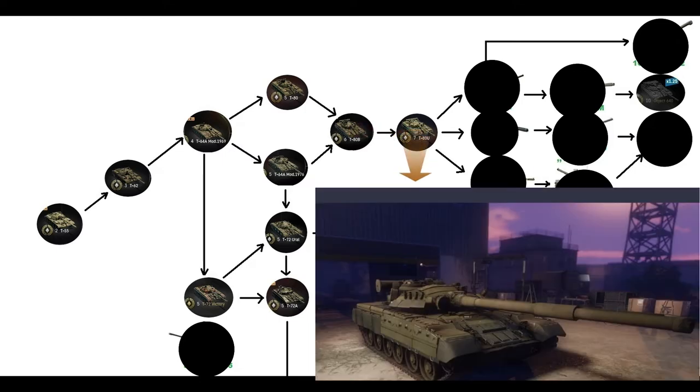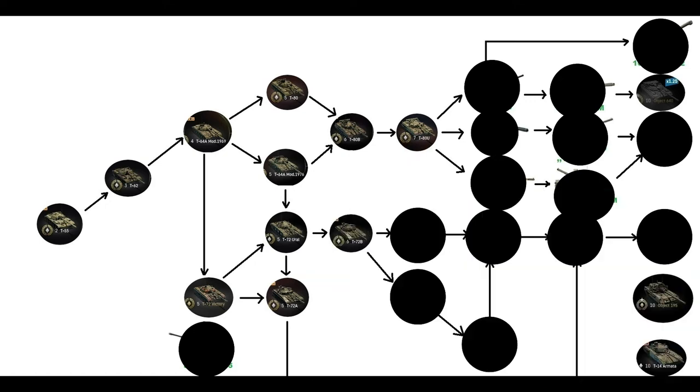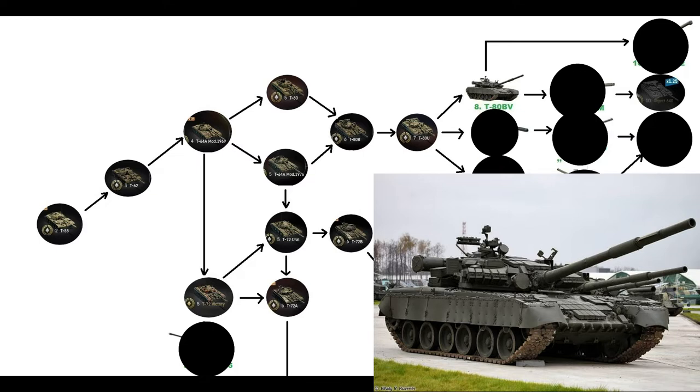Here we have important tanks that we don't have in the game. T-80U splits into three main branches. Let's start with the first one: the T-80BV. The T-80BV is an upgraded version of the T-80B which entered service with the Russian armed forces in 1985.